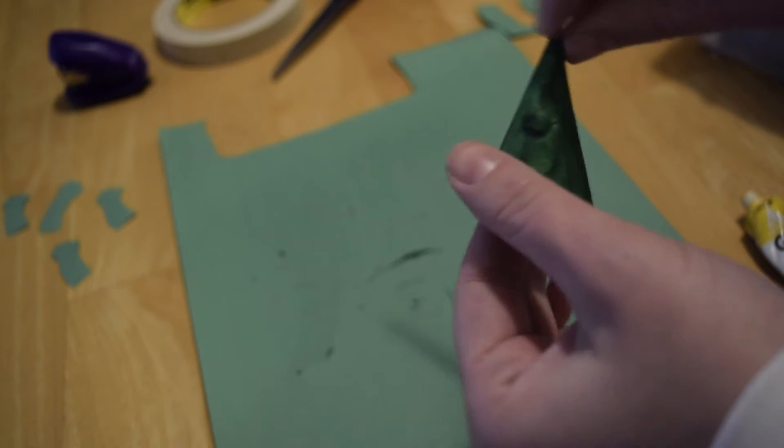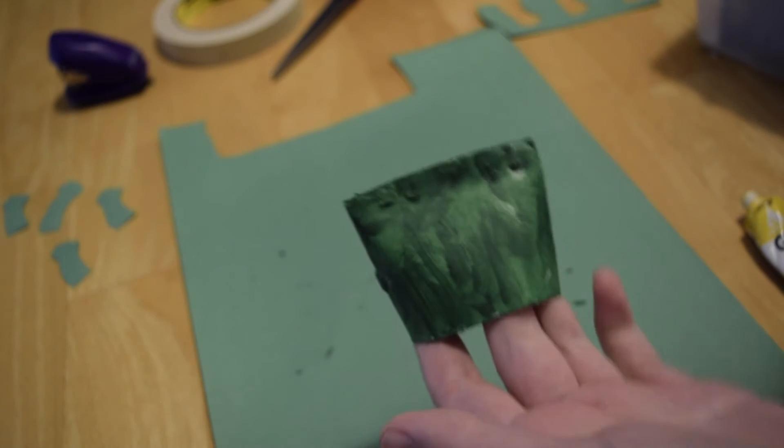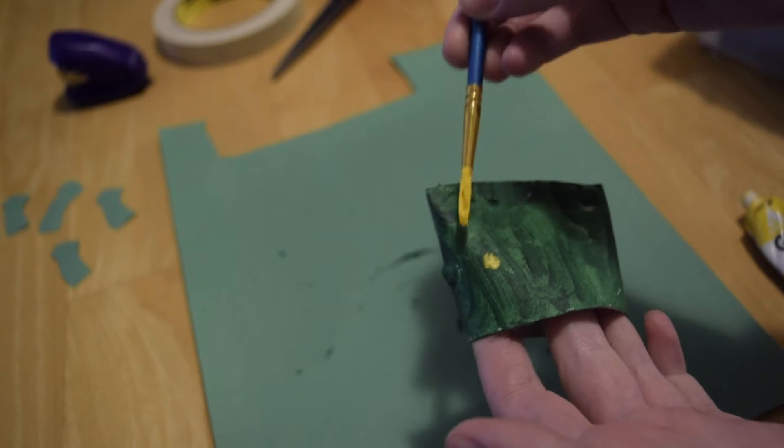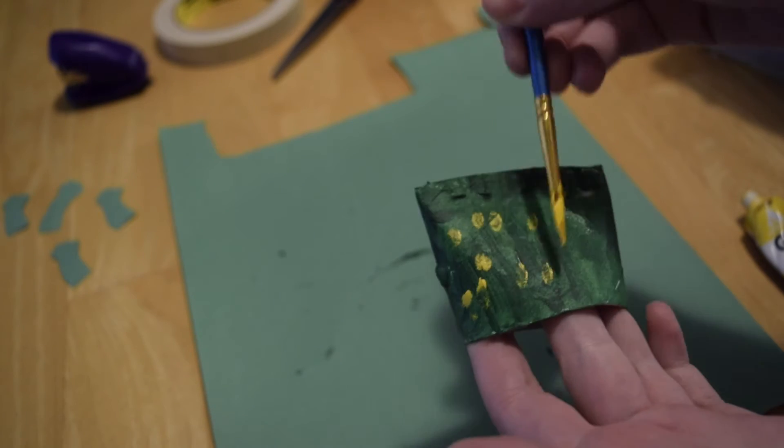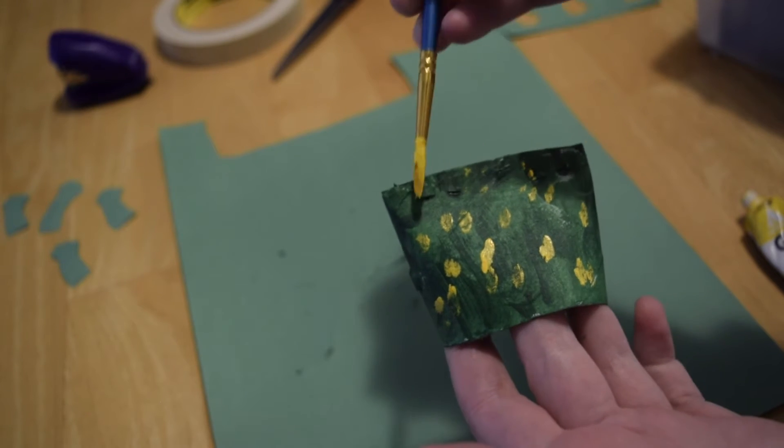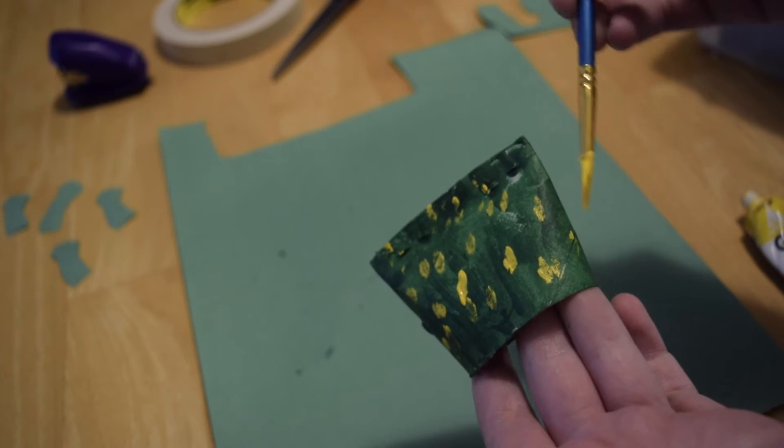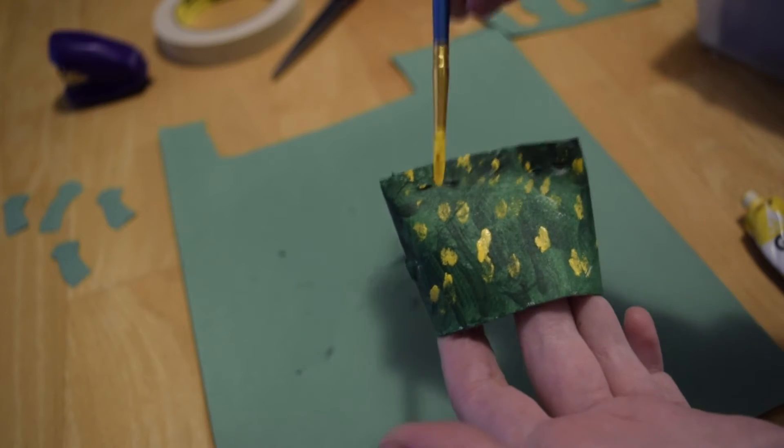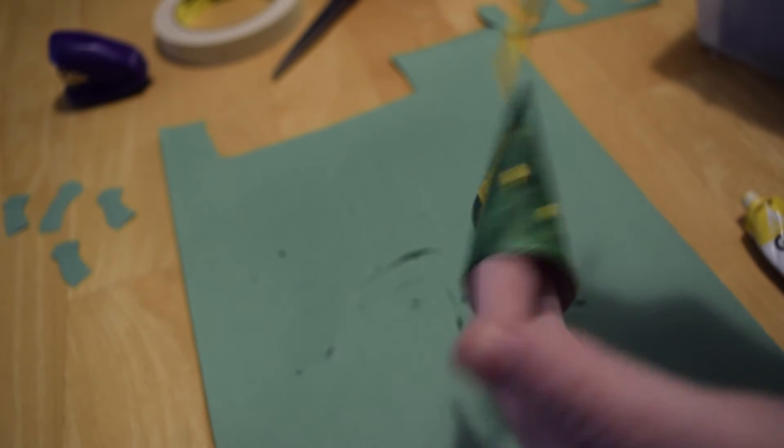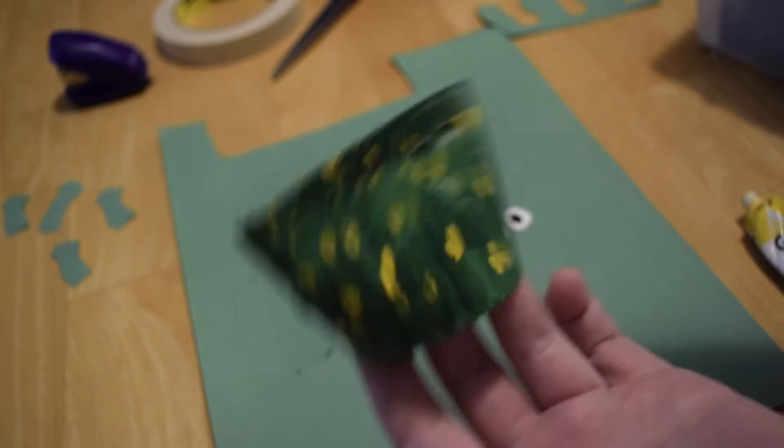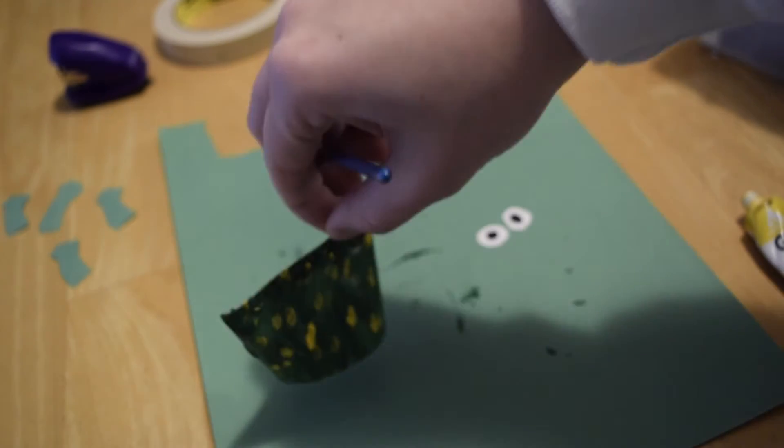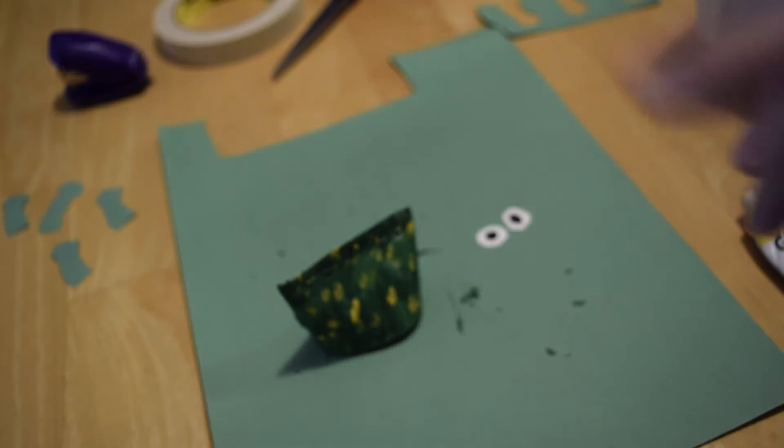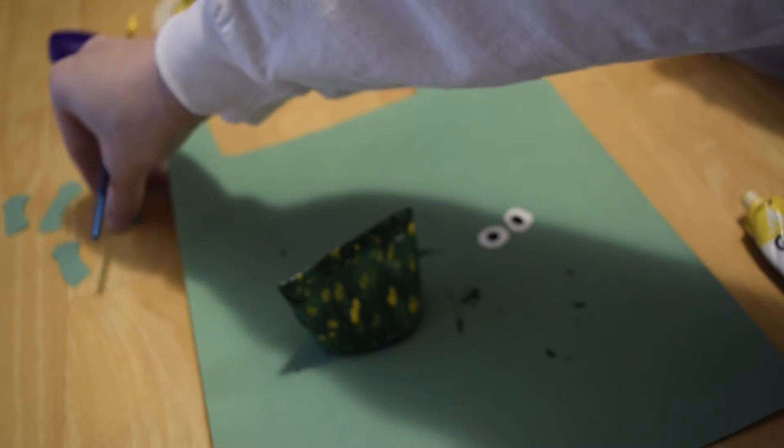All right, now that we have the belly, I'm going to flip it over to the back of the frog and put some yellow specks on there. Making yellow specks is really simple, all you got to do is do a little dab with your paintbrush. And there we go, we've got a speckled frog. And to make sure that the legs match, I'm also going to be putting some yellow specks on each of our frog legs here.